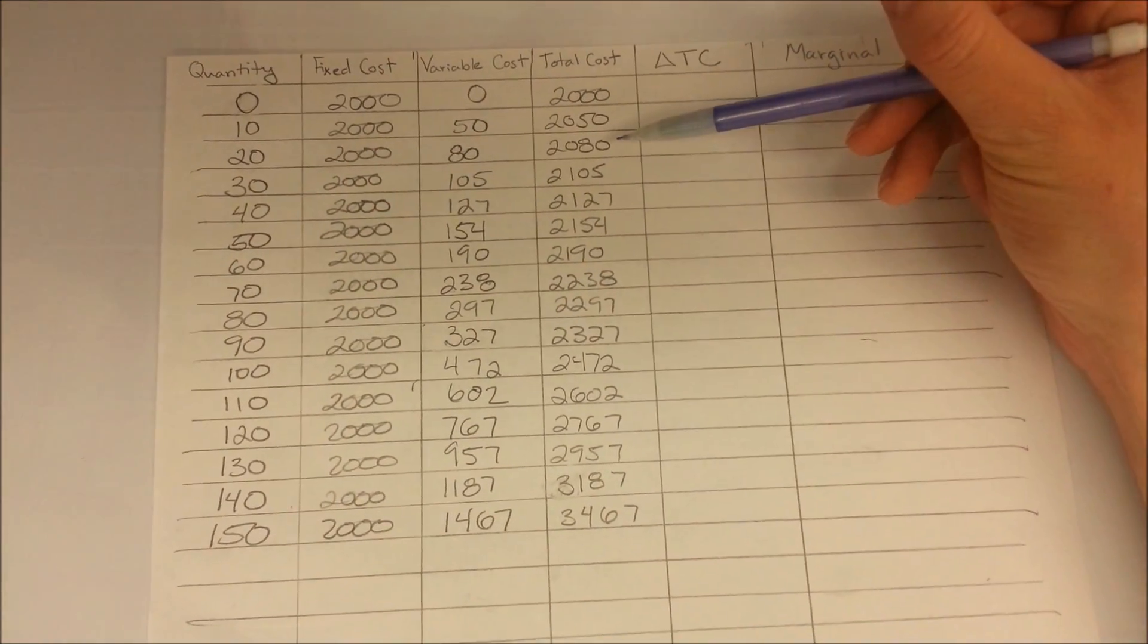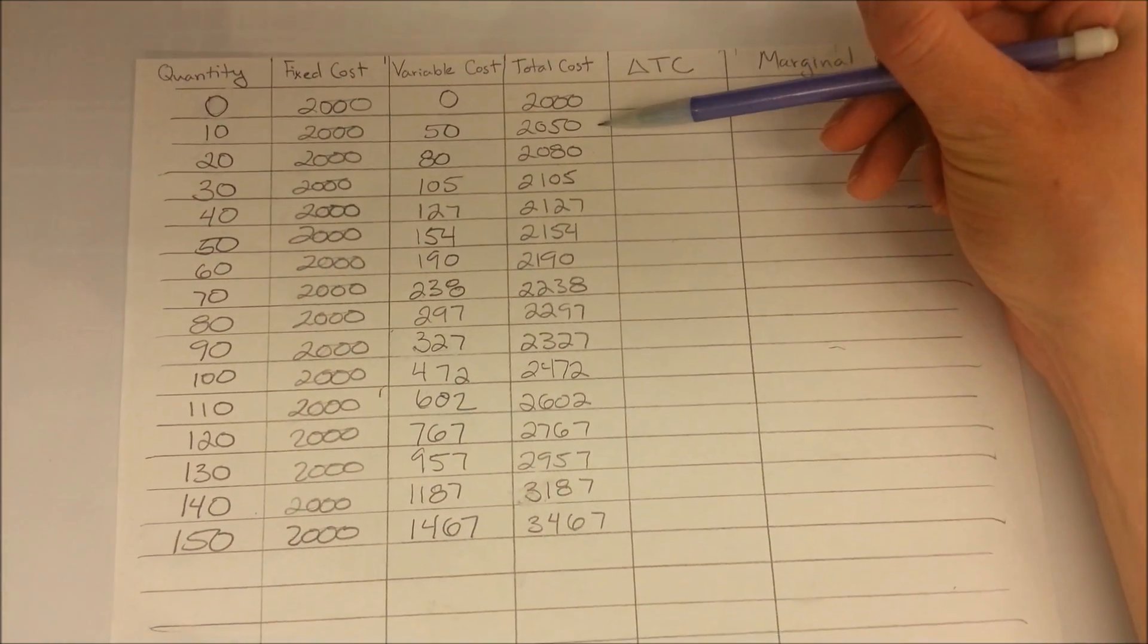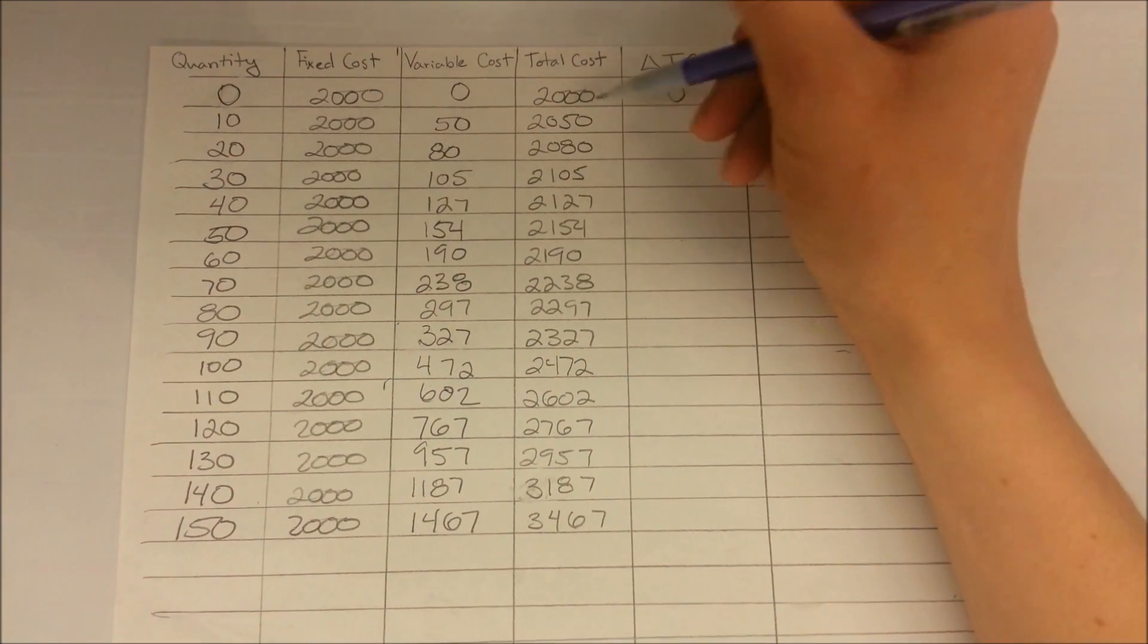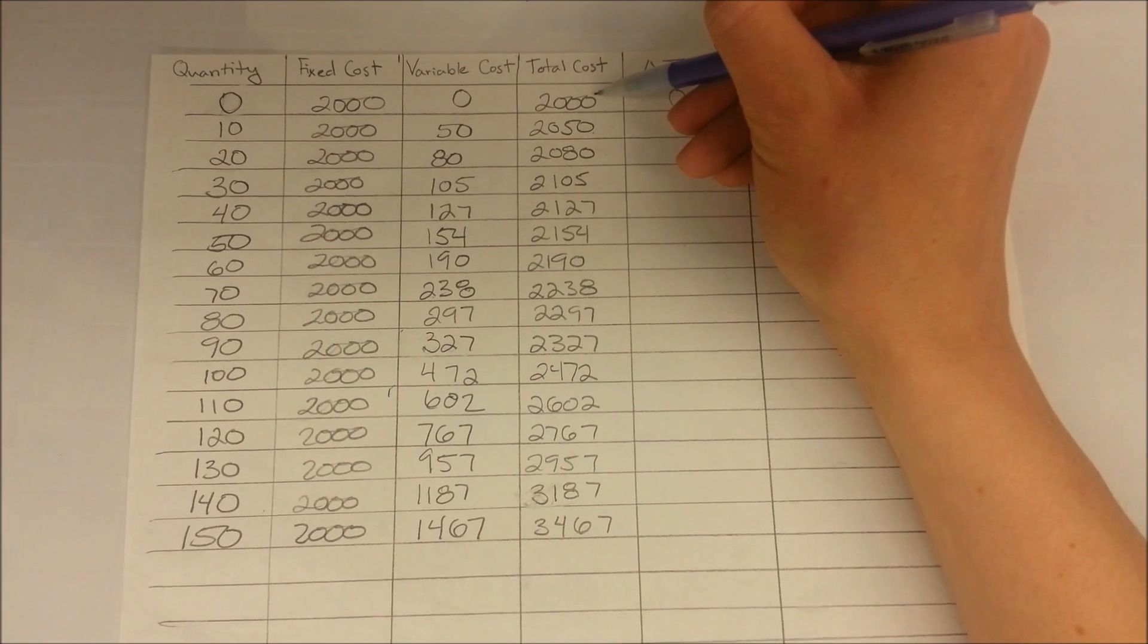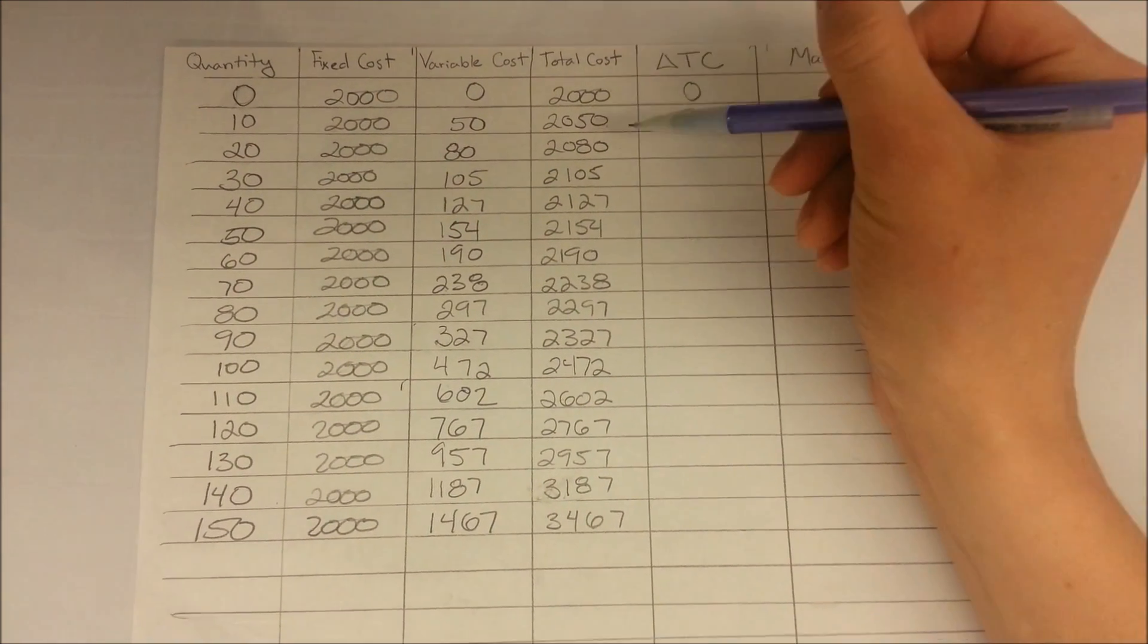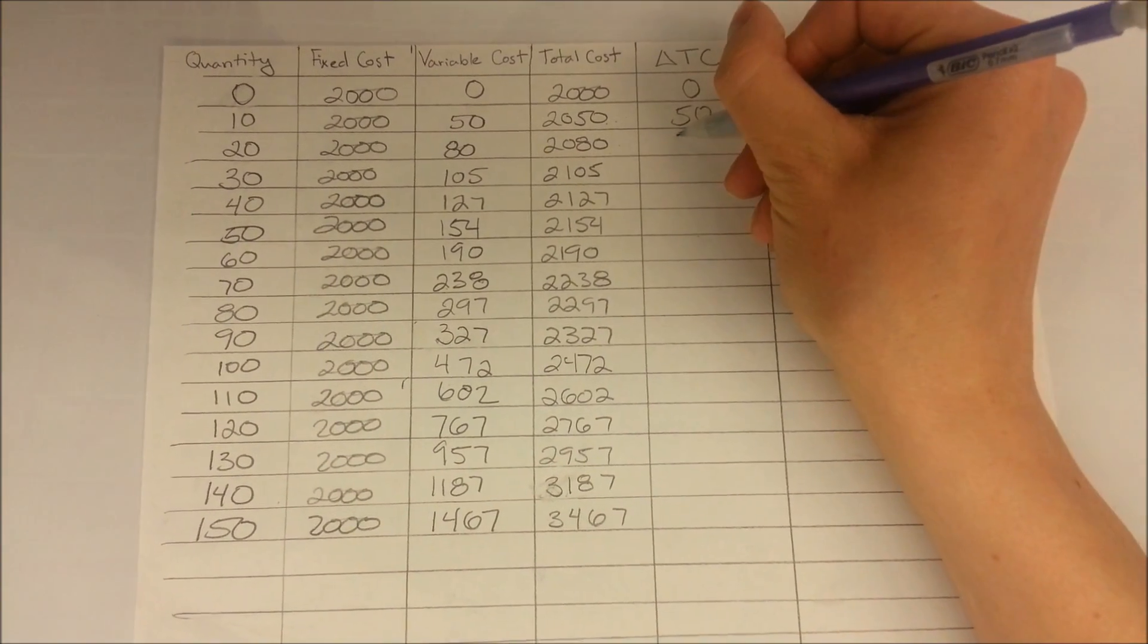To determine total cost, we take our current value of total cost and subtract the previous. The first will be zero, the second will be $2,050 minus $2,000. The third will be $2,080 minus $2,050.